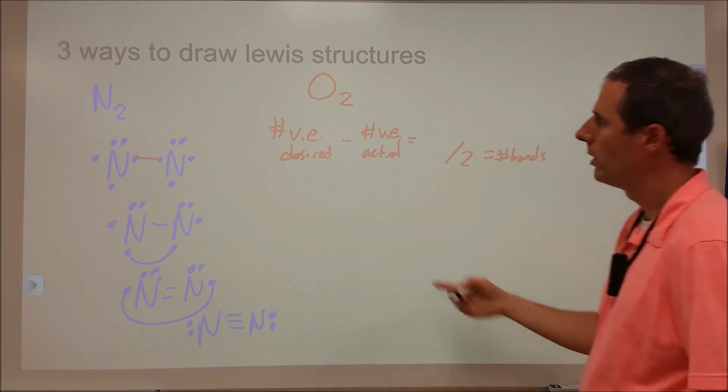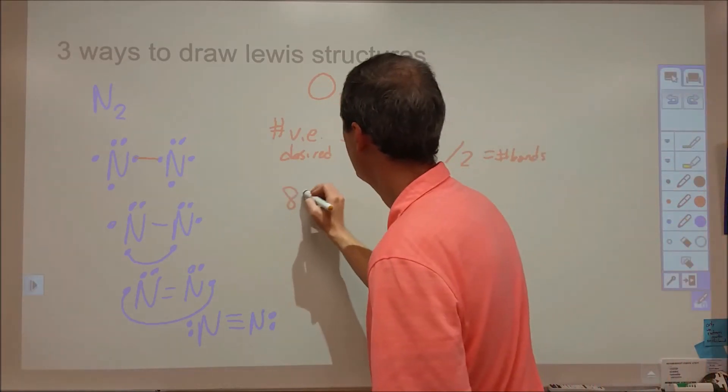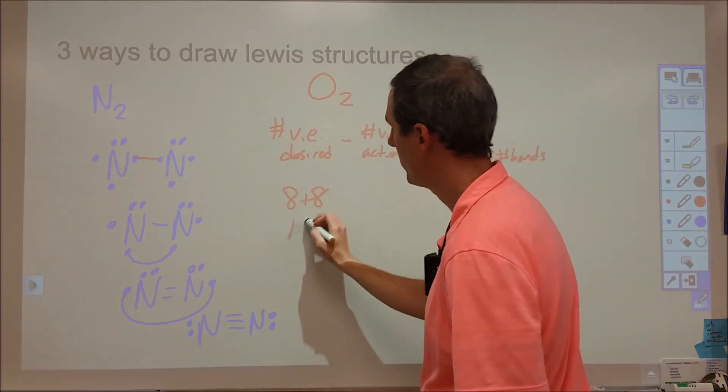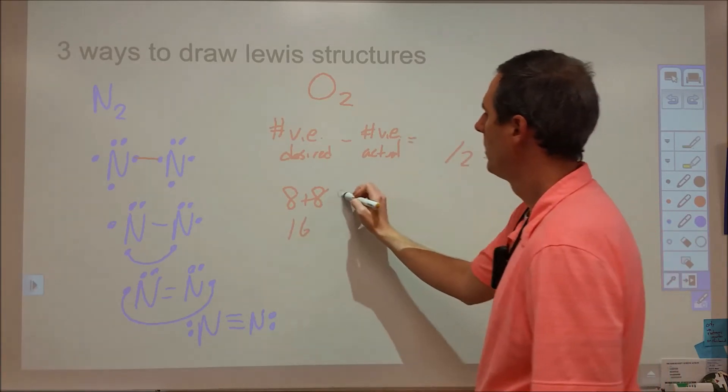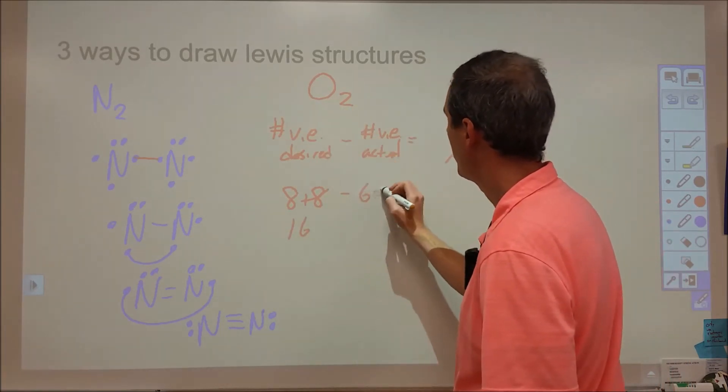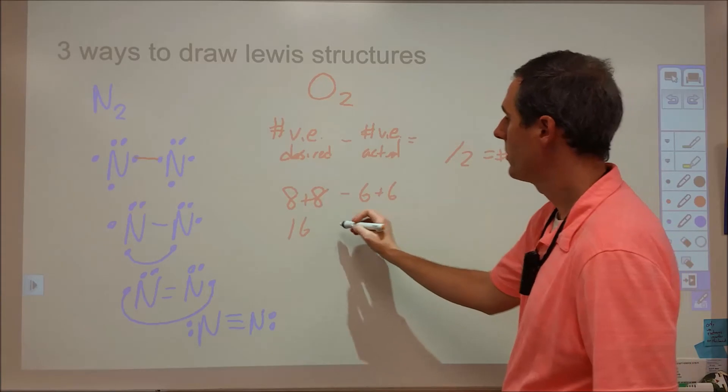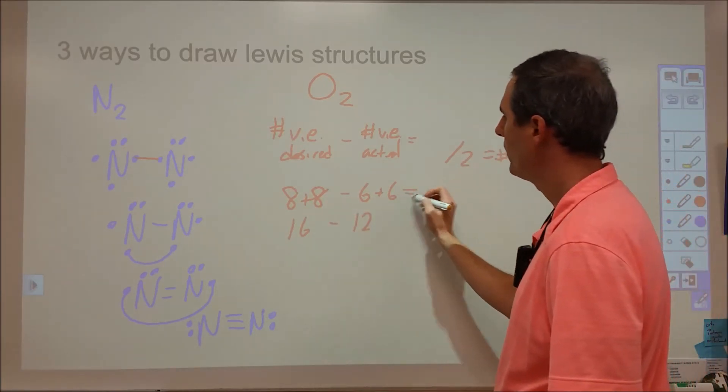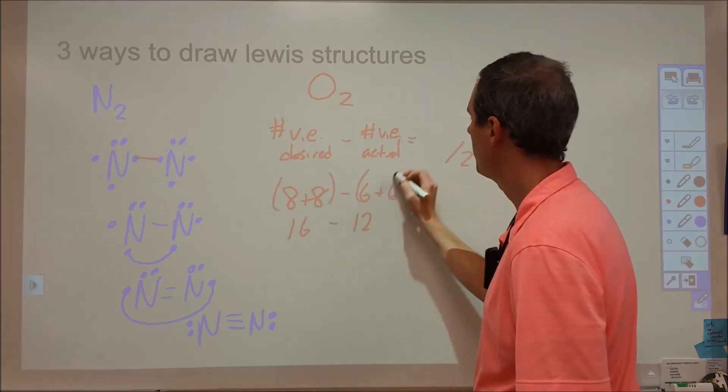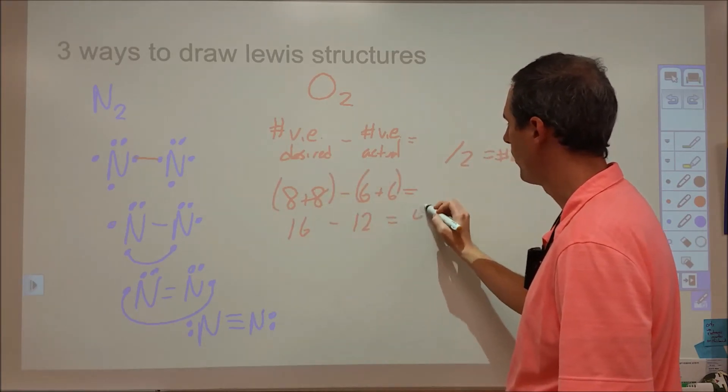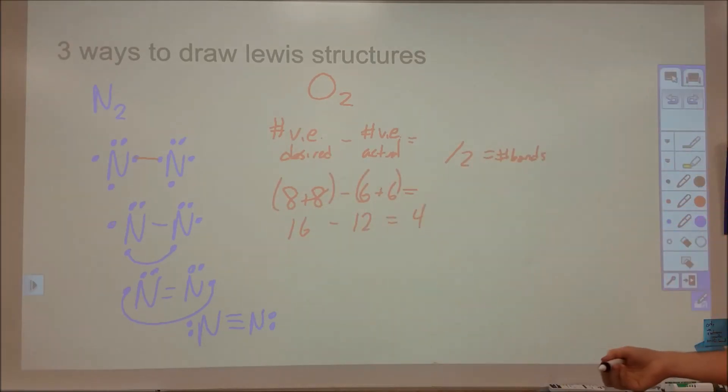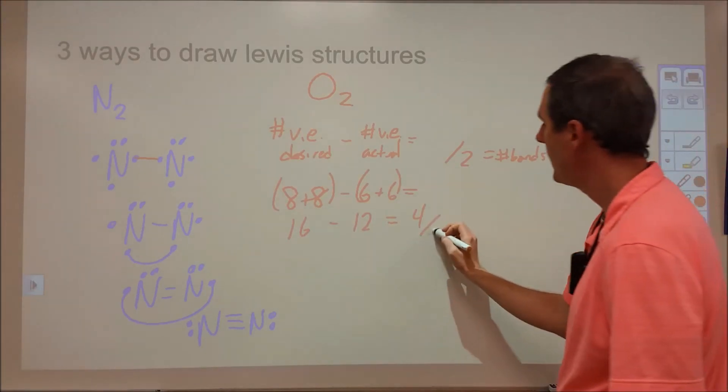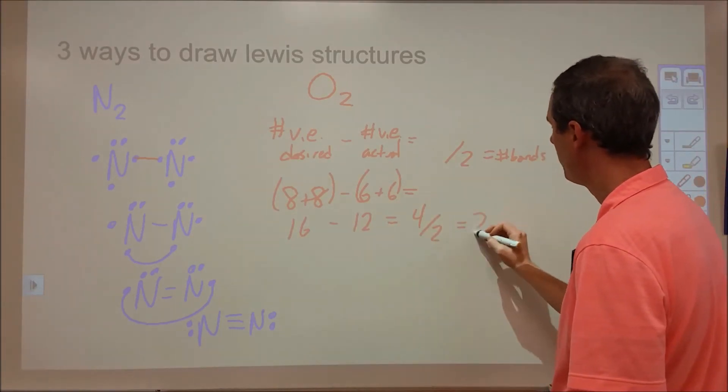So here in O2, we have two different atoms. Each of them would desire 8 electrons, or 16 total. And then oxygen has 6 electrons for each one that it brings. So it has 12 electrons to work with in its valence. So if we take 8 plus 8 minus 6 plus 6, we'll end up with 4. So we wish we had 4 more electrons. If we divide that by 2, we'll form 2 bonds.